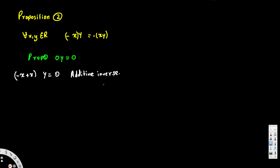Next we apply the distributive law. The distributive law gives us negative x times y plus xy equals zero. So instead of zero we can write that expression: negative x times y plus xy, expanding the left-hand side.